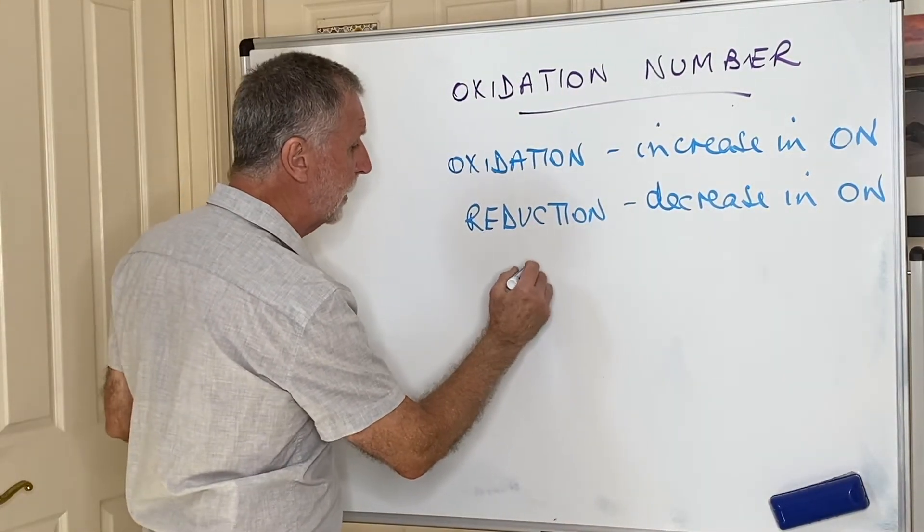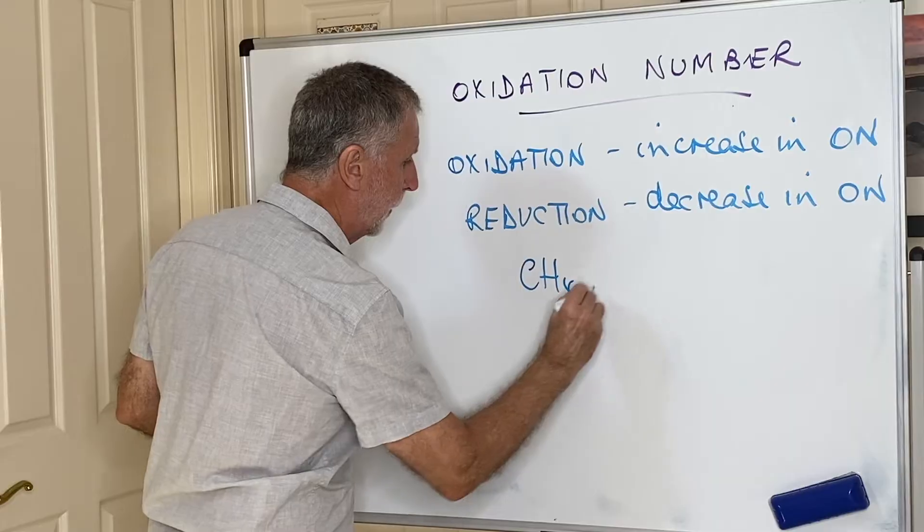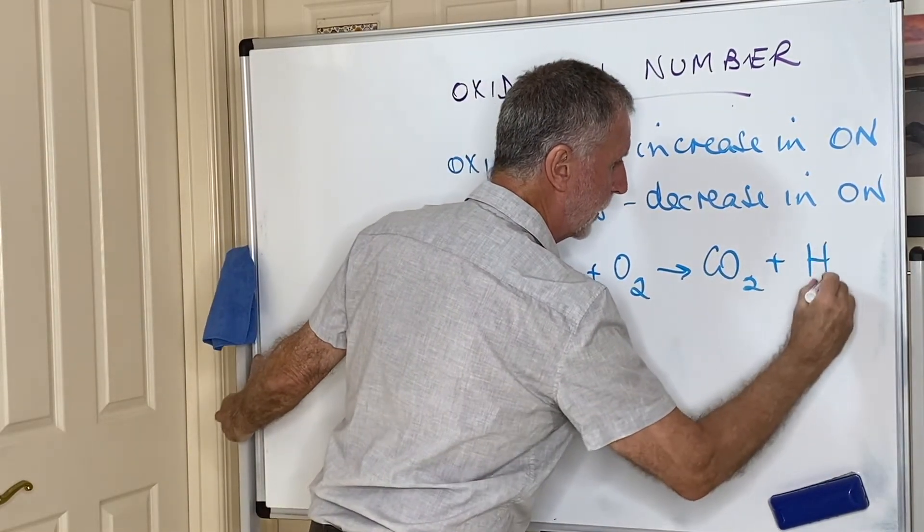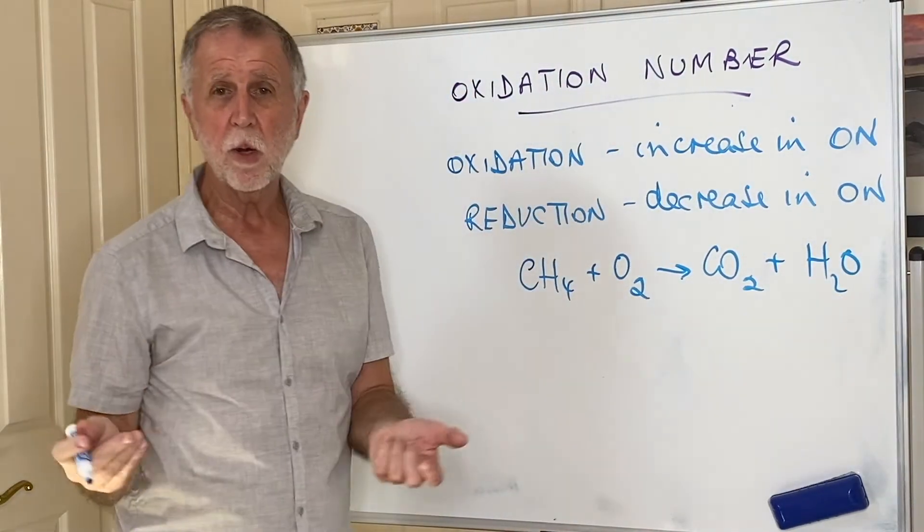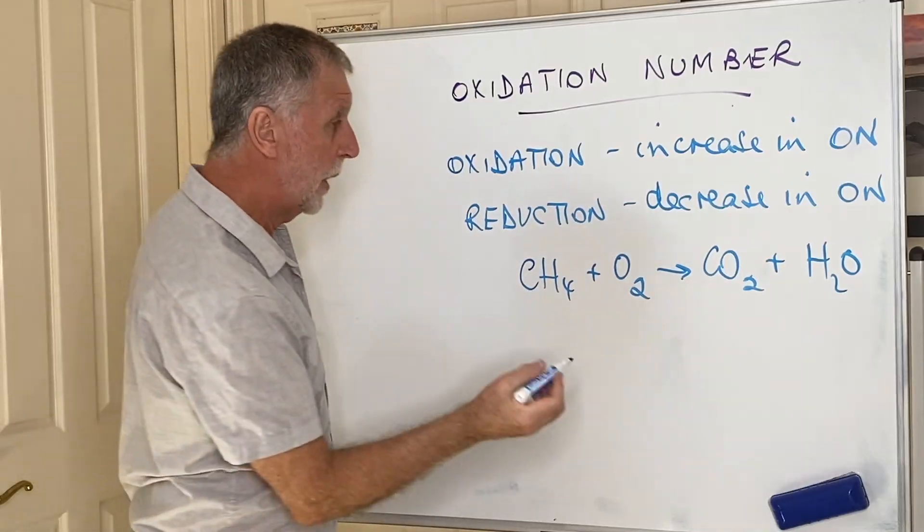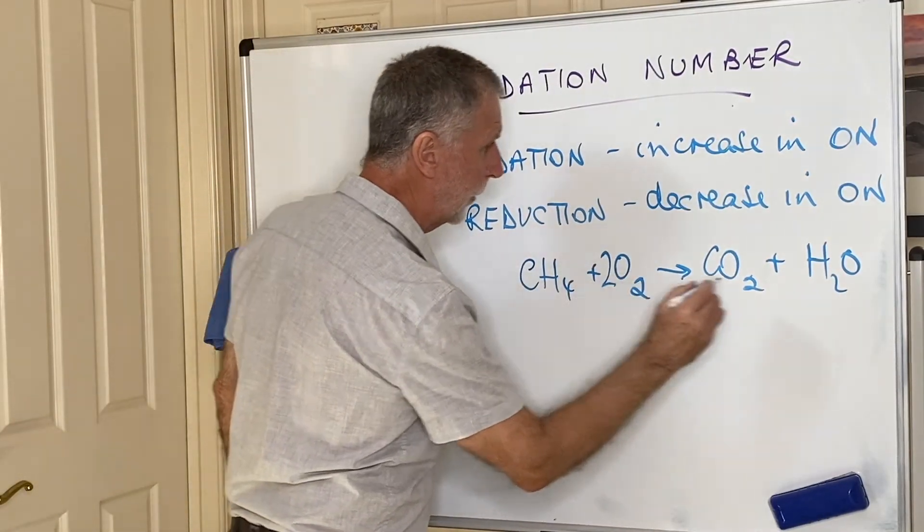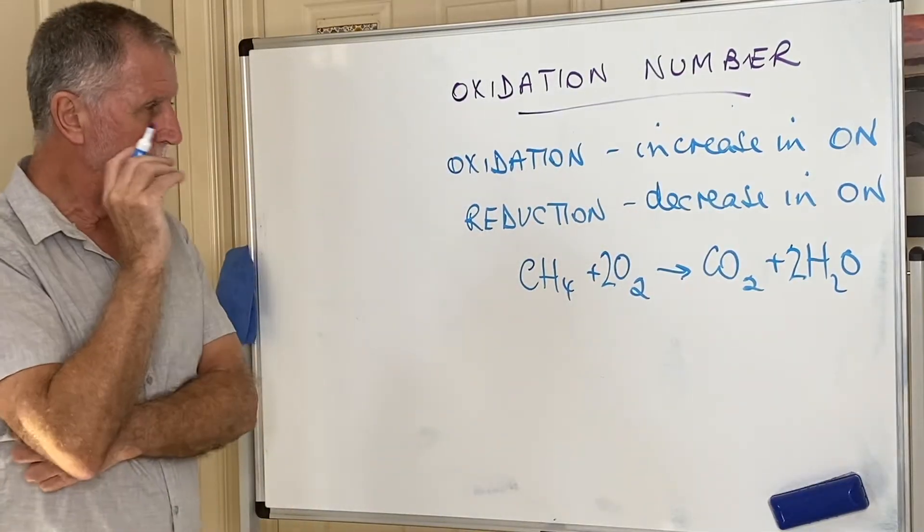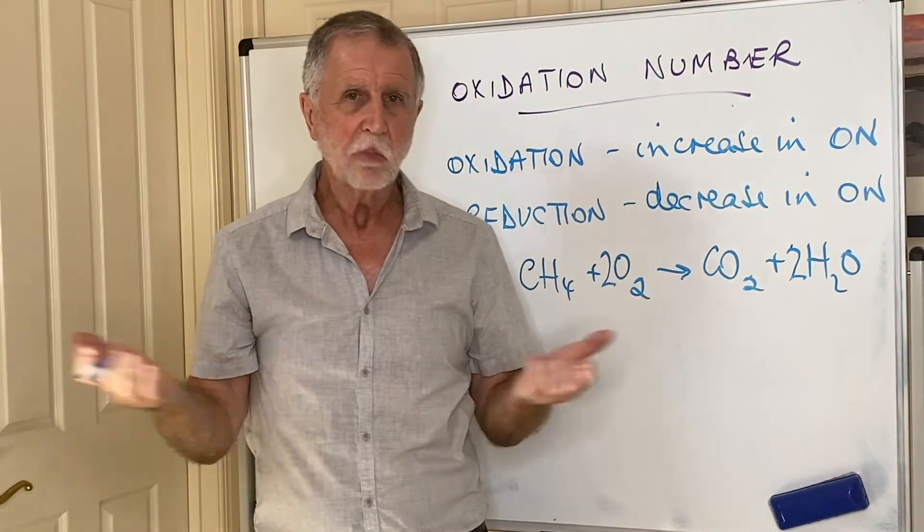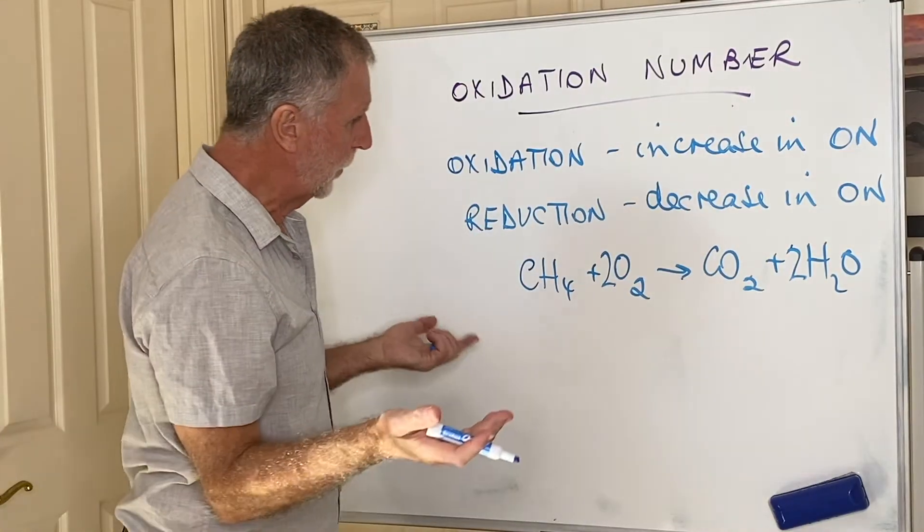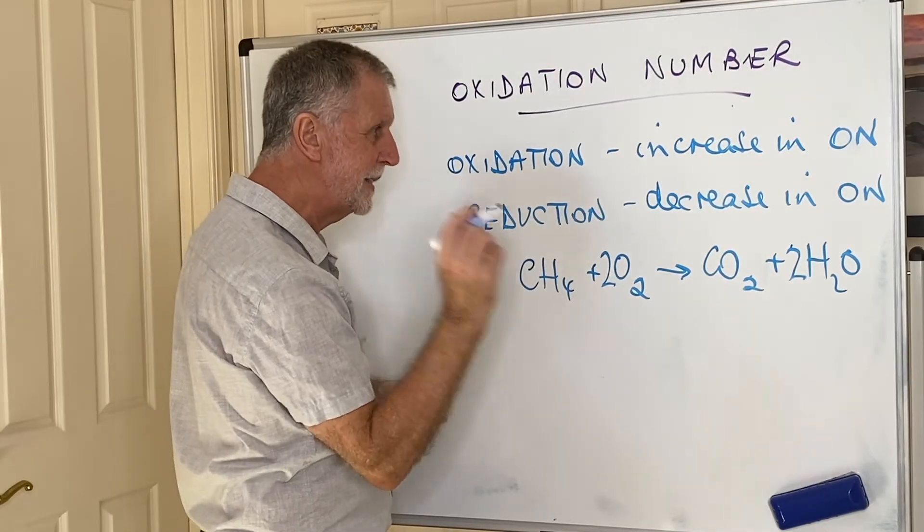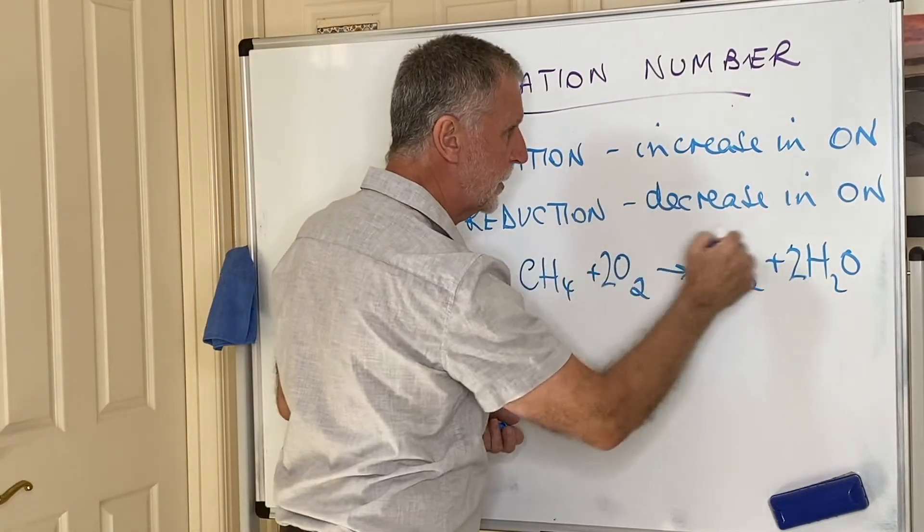For example, let's take an equation. Let's take methane burning in oxygen to make carbon dioxide and water. Now all combustion reactions are oxidations. They're gaining oxygen, one of the early definitions of oxidation. We need two there and we need two there to balance. Now when you're doing this, you can see very clearly electrons are not obvious. Therefore it's very difficult to work out oxidation reduction in terms of electrons. Instead, we're going to use oxidation numbers.